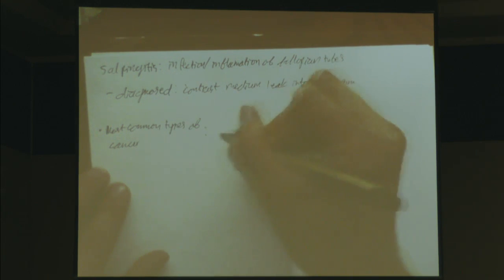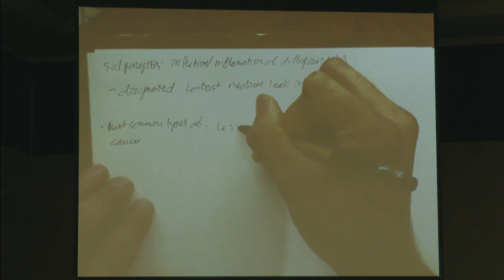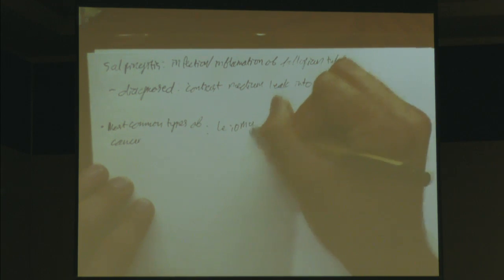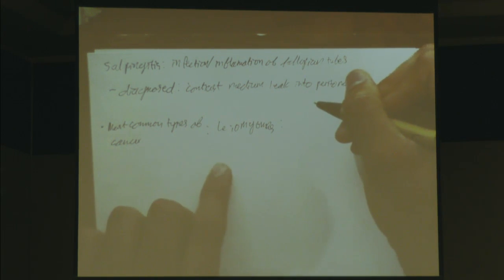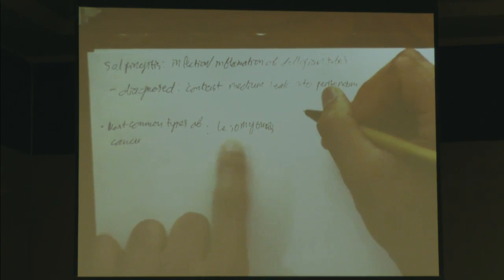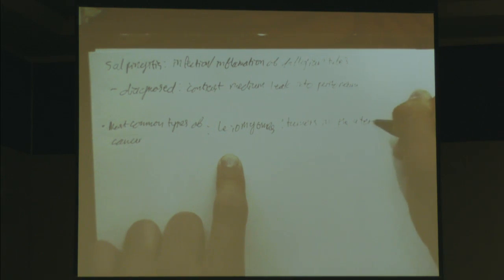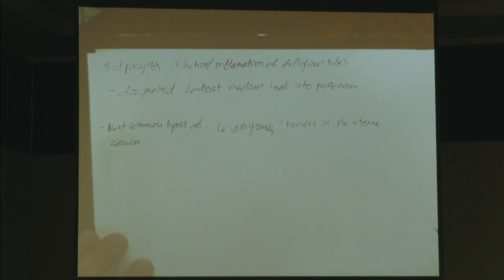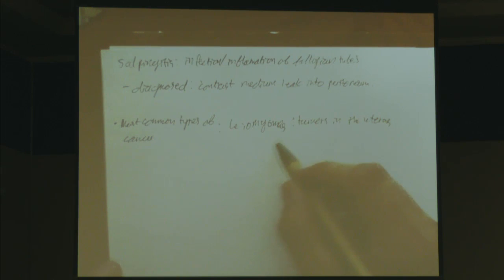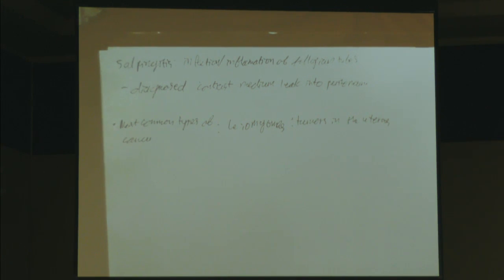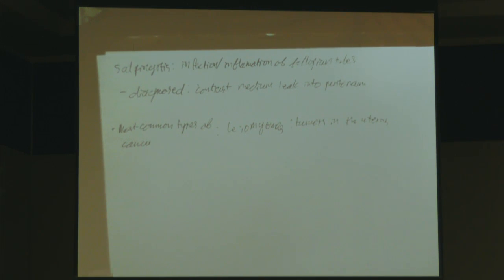One of the most common types of genital cancers in females is leiomyomas — tumors in the uterus. These are usually benign smooth muscle tumors. Teratomas are a different location and are usually more malignant. Leiomyomas are specifically in the uterus — make sure you understand that locational difference.